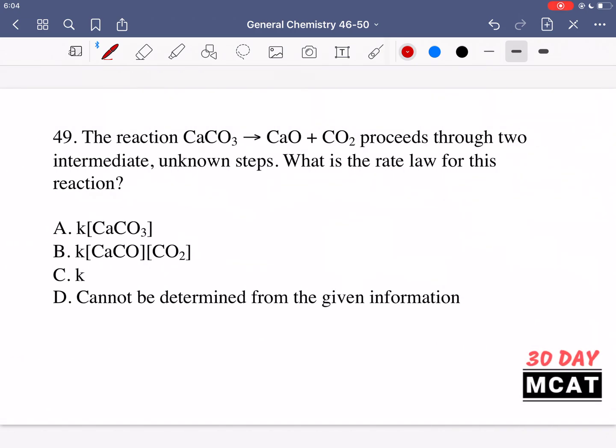In question 49 it says this reaction given here proceeds through two intermediate unknown steps. What is the rate law for this reaction? So we have this reaction and we know that there are two intermediate and unknown steps and we're asked for the rate law.